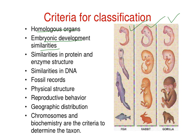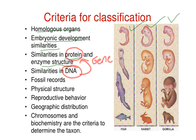Other criteria include similarities in protein and enzyme structure. Proteins are encoded by DNA, so if organisms share the same gene, they produce the same protein and enzyme, meaning their DNA is similar. Further criteria include fossil records, physical structure, reproductive behavior, and geographic distribution. Chromosomes, DNA, and biochemistry are all criteria used in natural classification today.